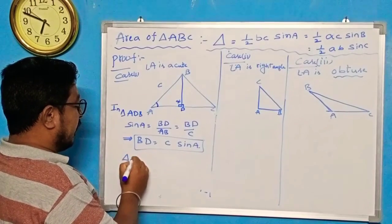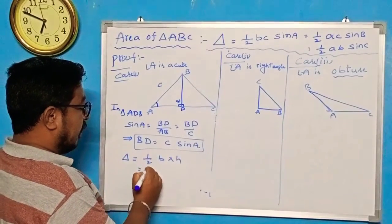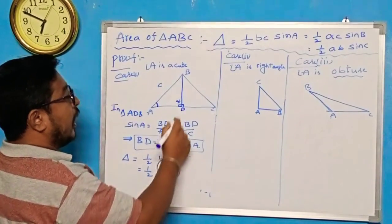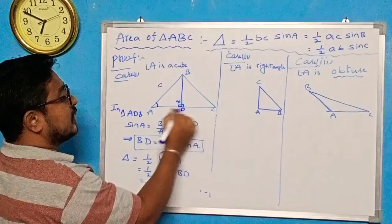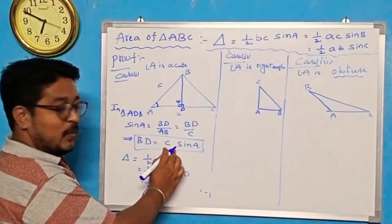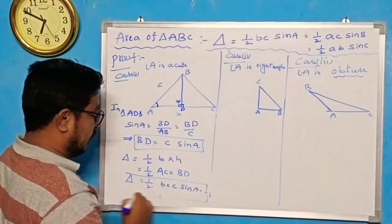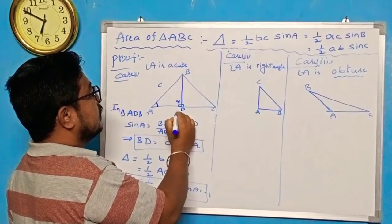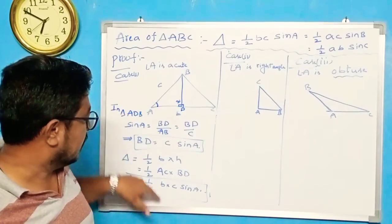Area of triangle formula is half base into height. Here, base is AC and height is BD. AC notation is B, and BD value is C sin A. So area of triangle delta equals half BC sin A. The notation is B and C, and the included angle is A — half BC sin A. This proves the formula for the acute angle case.